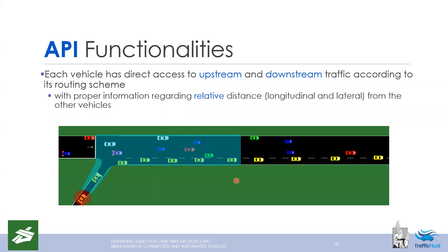An important feature for controller design in lane-free environments is that each vehicle can observe both upstream and downstream according to its routing scheme. Crucially, vehicles observe relative distances both longitudinally and laterally. Since SUMO handles turning operations automatically, the vehicle controller does not observe this; instead, it perceives its route as a simply unfolded straight line, and relative distances are adjusted according to this assumption.